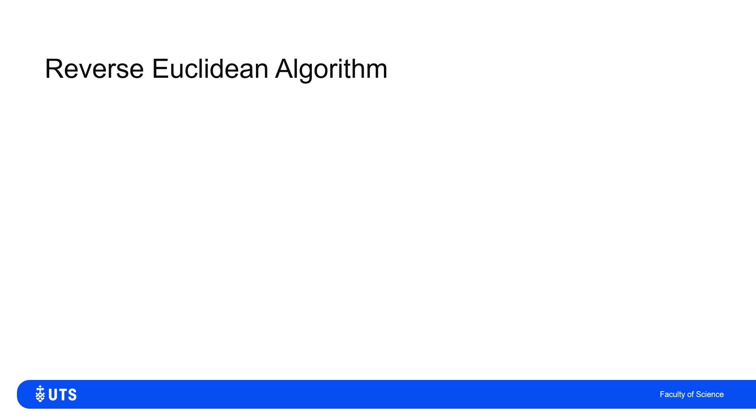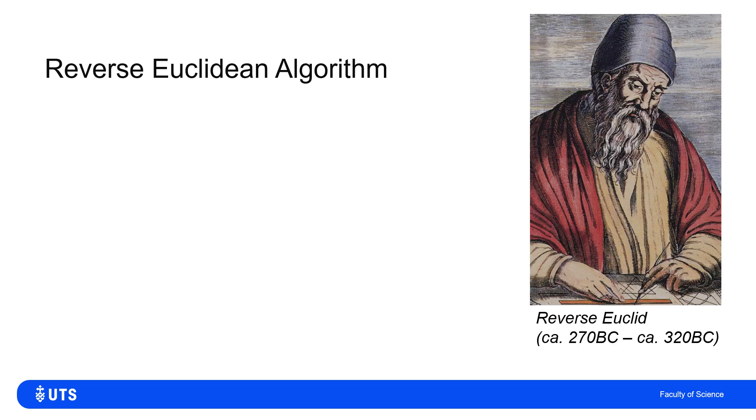I just want to illustrate one more example of our good friend reverse Euclid. That is reverse Euclid in the mirror, a man who died before he was born and looks the other way.